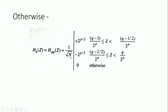Otherwise, the Haar function h_k(z) equals h_{p,q}(z) equals (1/√N) · (2^(p/2)) when z is in the range [(q−1)/2^p, (q−1/2)/2^p), and equals (1/√N) · (−2^(p/2)) when z is in the range [(q−1/2)/2^p, q/2^p]. Otherwise, h_k(z) equals zero.